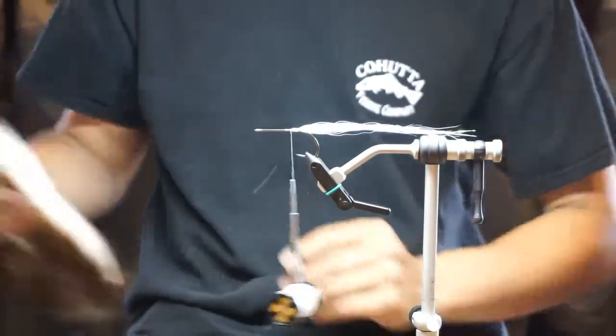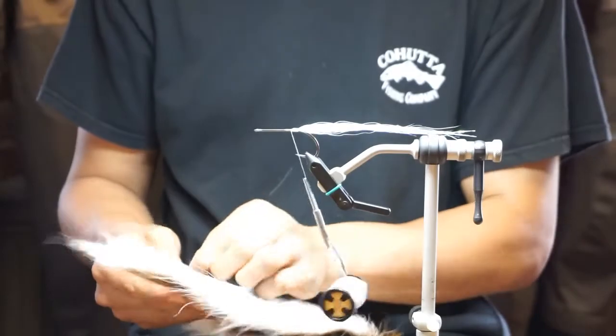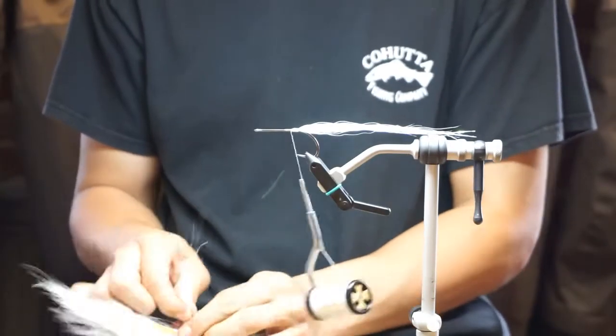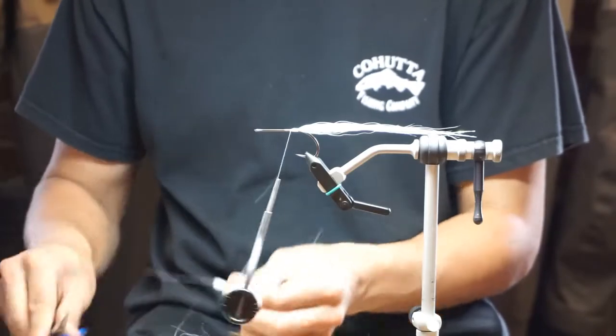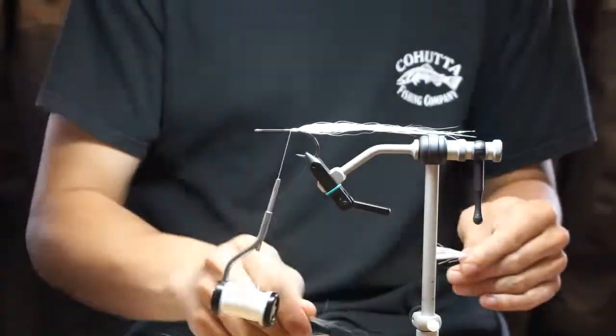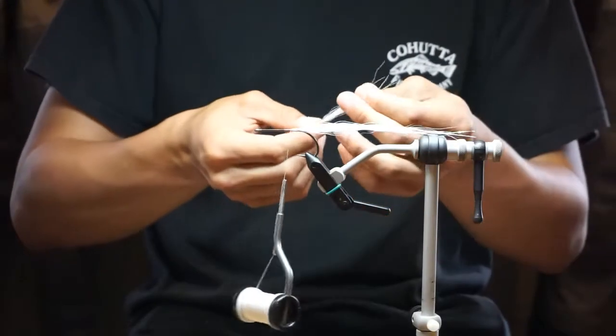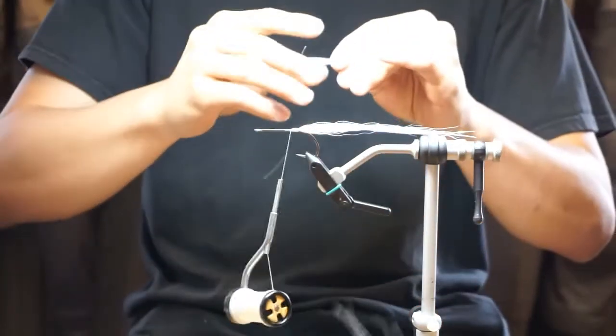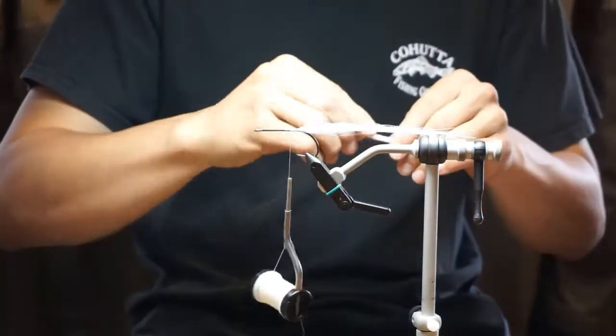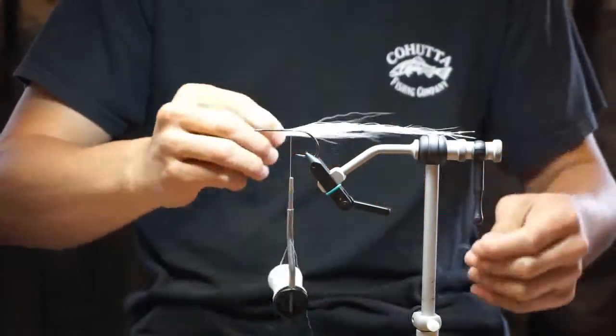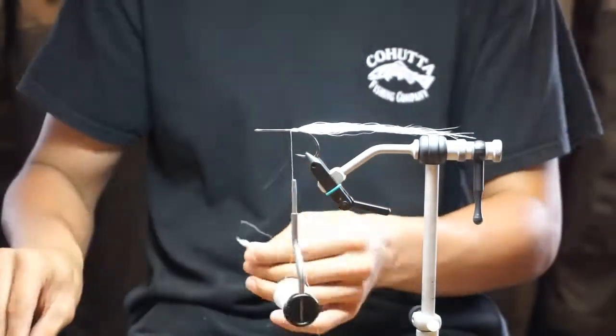So now we're going to take some more bucktail, and as I go up the shank I'm actually going to use shorter and shorter bucktail. I'm pretty sparse on this too. I'm not putting a load of material on here because as we said, bucktail is a little bit more buoyant. So you don't want a ton of tail on here or else this thing's just going to float, especially on a floating or an intermediate line.